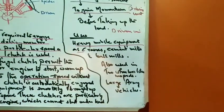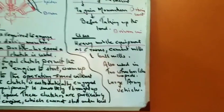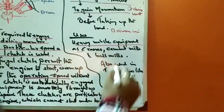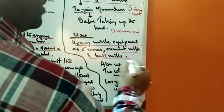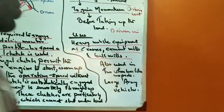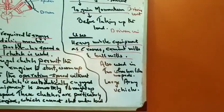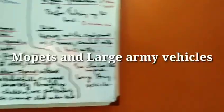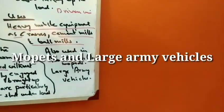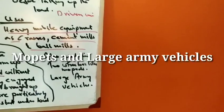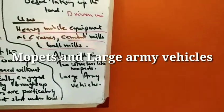Centrifugal clutches are used in heavy mobile equipment such as cranes, in cement mills and ball mills. They are also used in two-wheelers like mopeds and in large army vehicles.